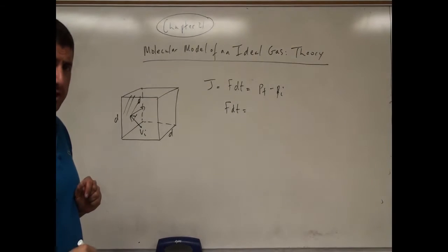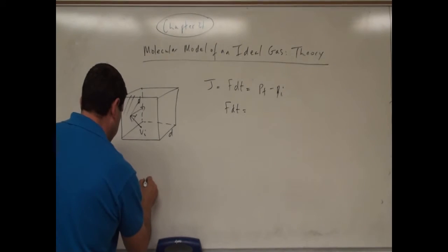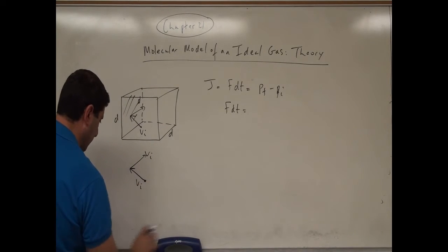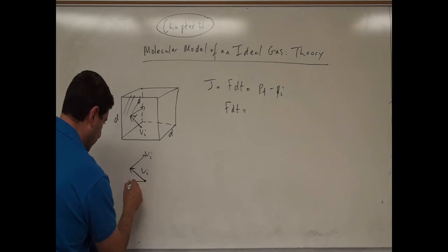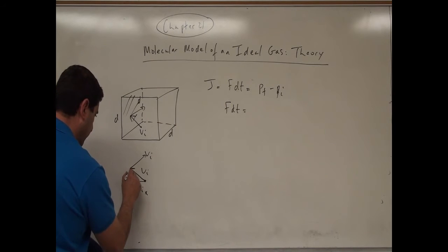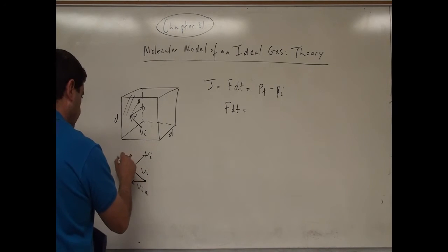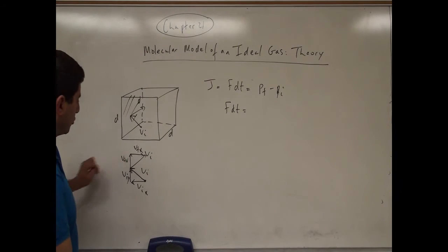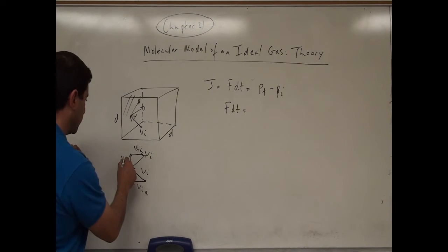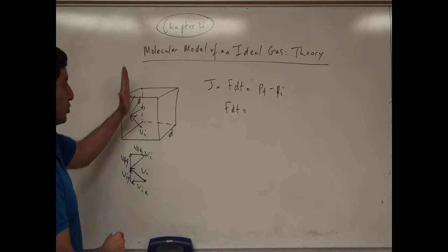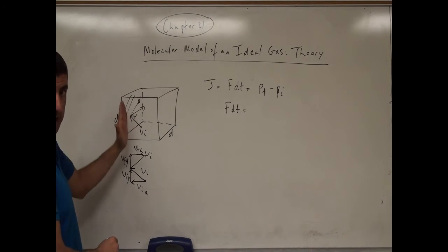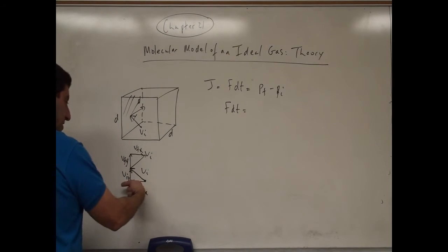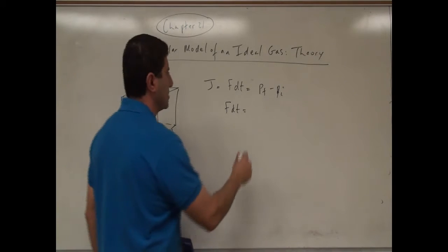The component of momentum that is changing is the x component. The initial velocity can be broken down into two components: v initial x and v initial y. We can also break the final velocity into v final y and v final x. The final velocity in the y direction does not change — it's as if the particle glides along the side of the box — so its y component doesn't change. But the x component experiences complete reflection: it's coming this way, then the final velocity is the other way.